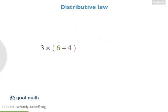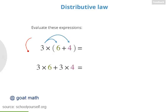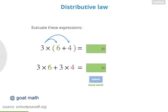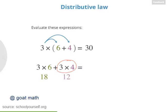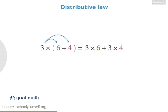Let's try another example: 3 times (6 plus 4), where 6 plus 4 is in parentheses. If we distribute the 3 into this sum, we have 3 times 6 plus 3 times 4. Try evaluating these two expressions to make sure they're equal. Nicely done — 6 plus 4 is 10, times 3 is 30. And down here, 3 times 6 is 18, 3 times 4 is 12, and 18 plus 12 equals 30. So these two expressions are equal, and it looks like the distributive law really works.